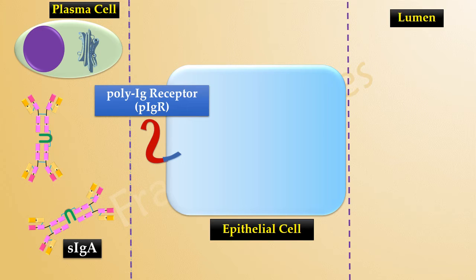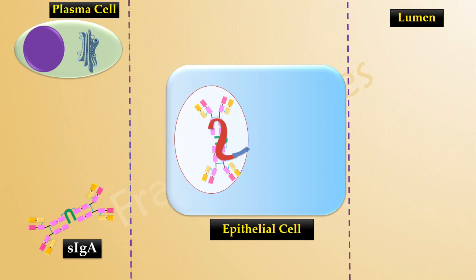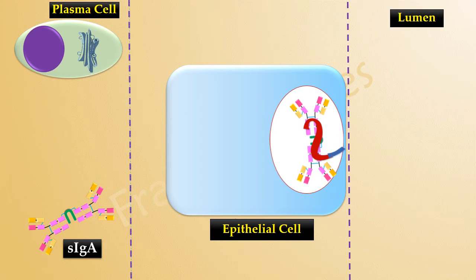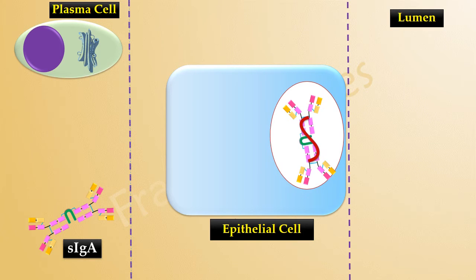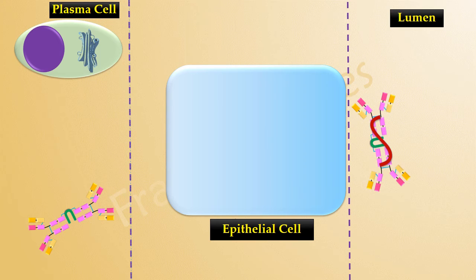These secreted IgA bind to a receptor expressed by epithelial cells of the mucosal surfaces. This receptor is called the poly-Ig receptor, which recognizes the J-chain of secreted IgA and binds to their C-terminal domains. Once bound, IgA is internalized into a transport vesicle, which moves to the opposite side of the epithelial cell.